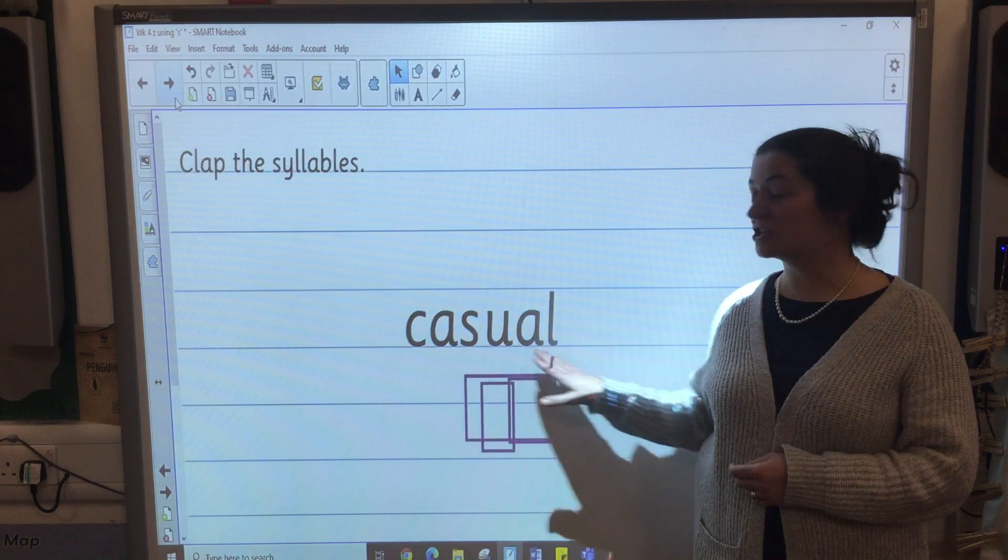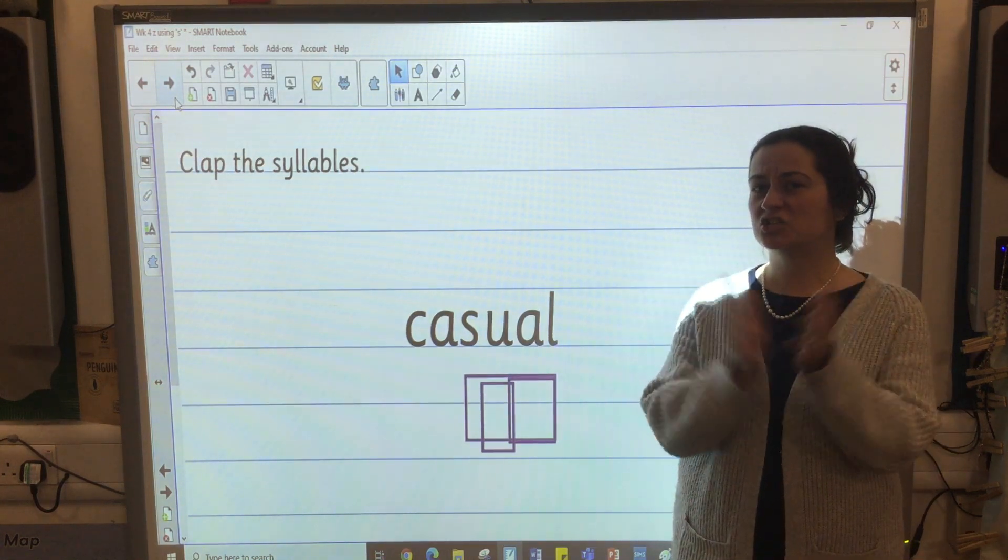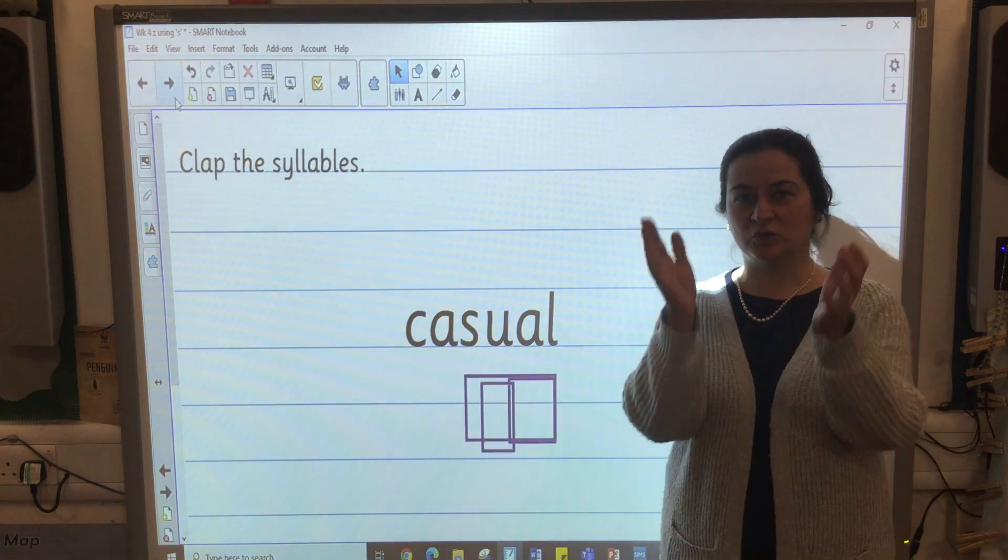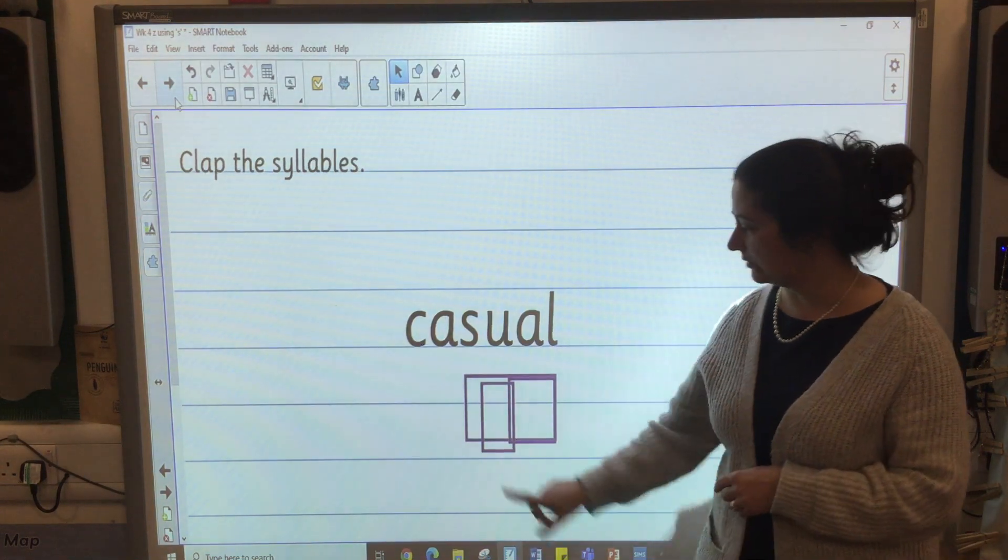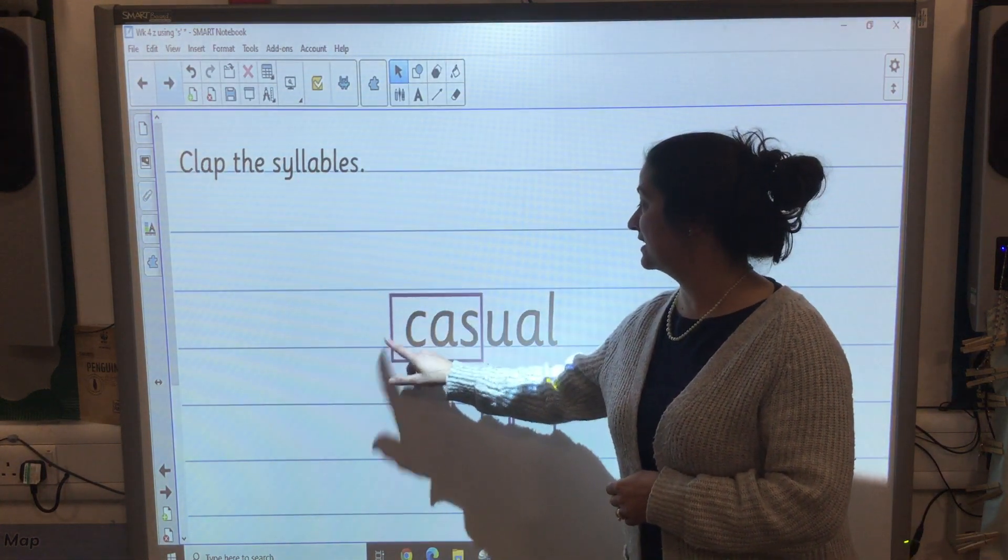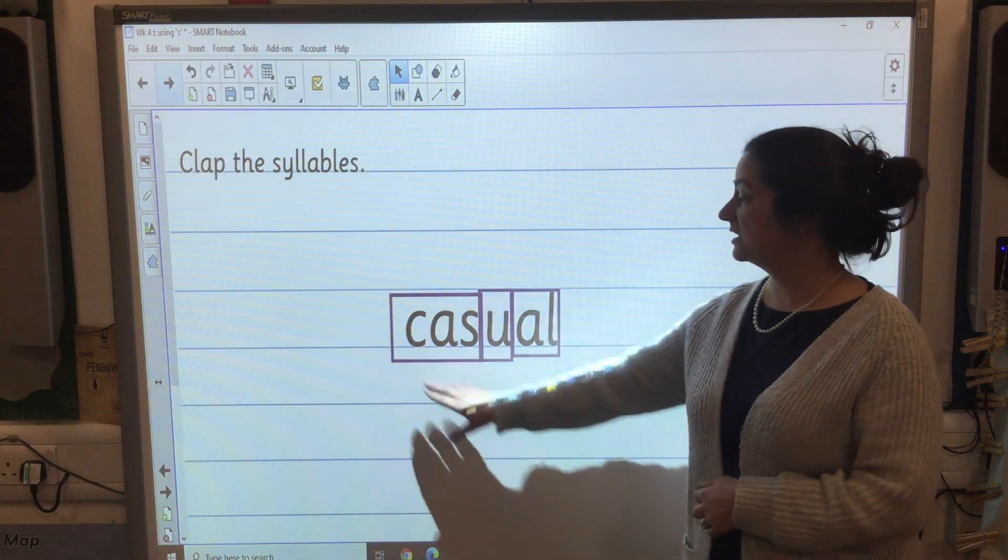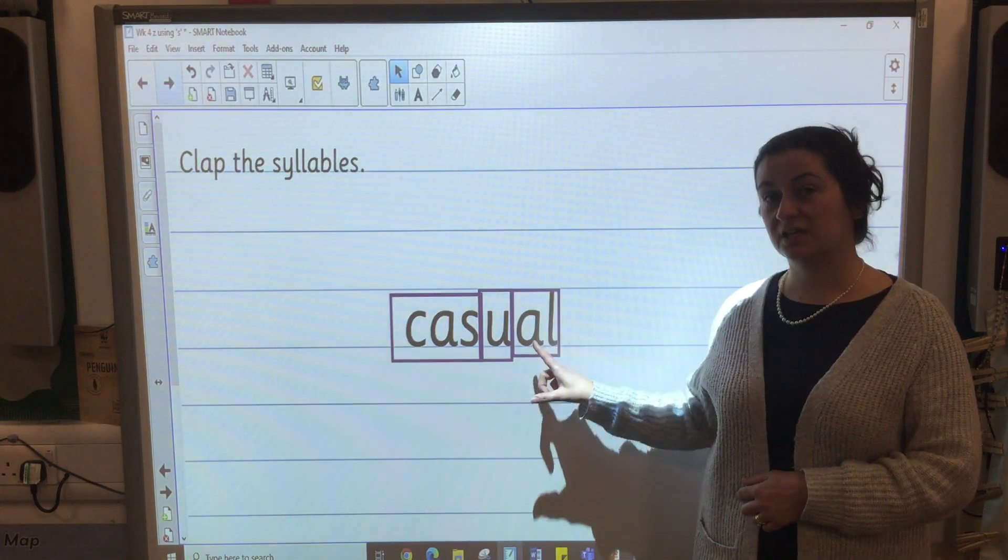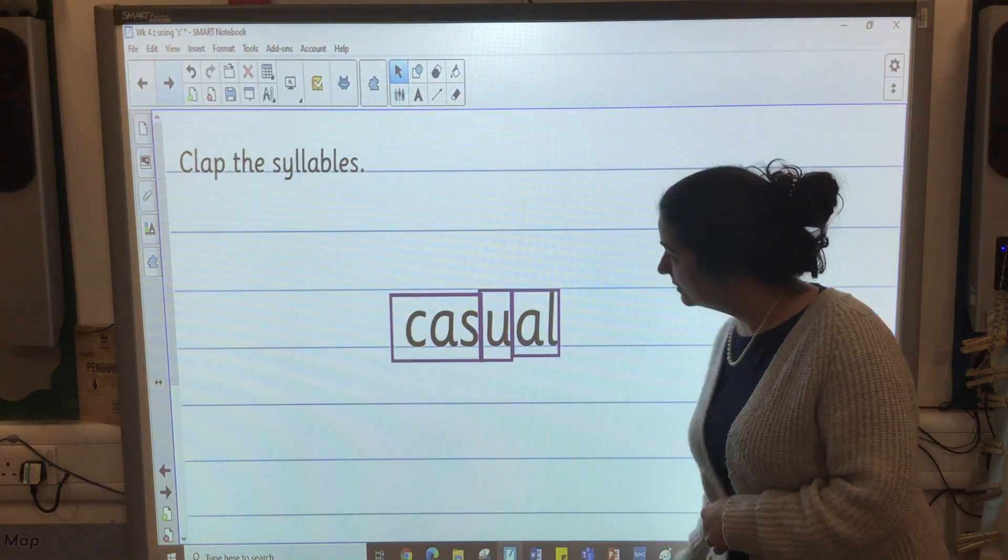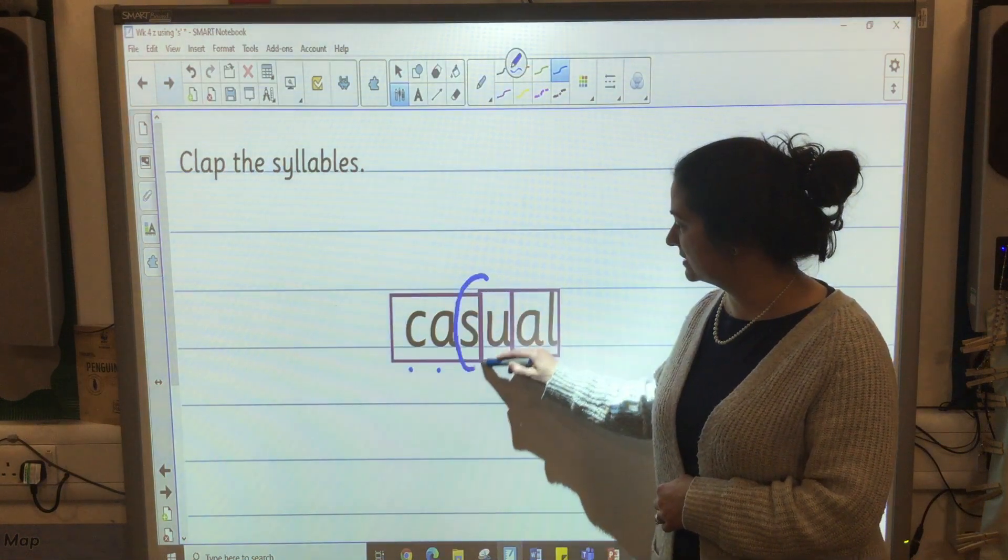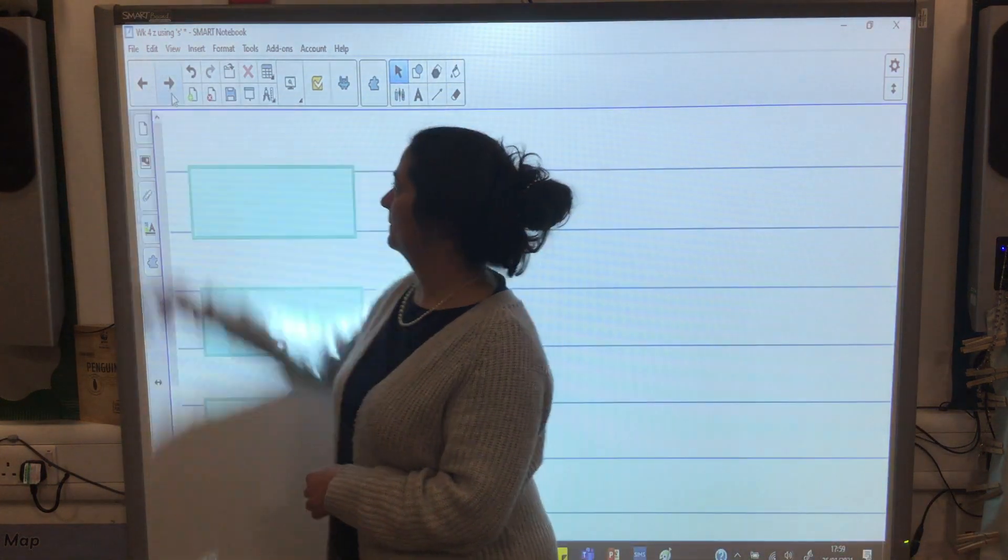The word is casual. Let's clap the syllables like we did. You might think it's casual but it isn't. Casual. Do it with me. Casual. How many times did you clap? Casual. Did you clap three times? Let's find out where the syllables are. We've got ca-su-al. You can see that there's a vowel in each syllable. There's our tricky part today. Casual.